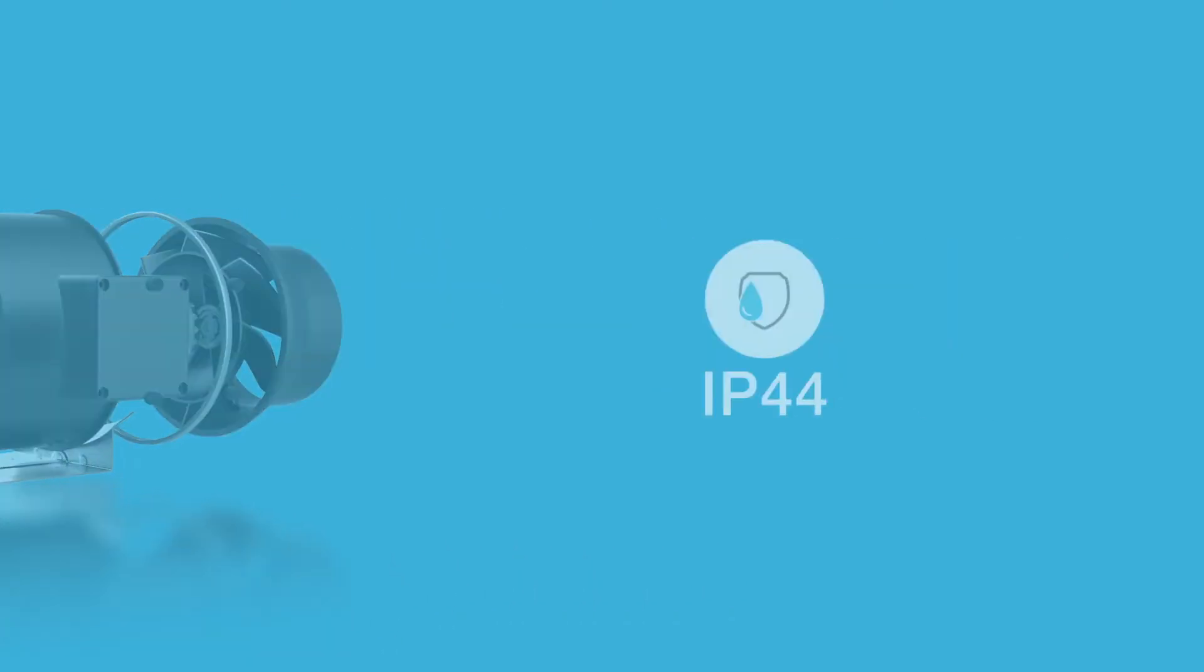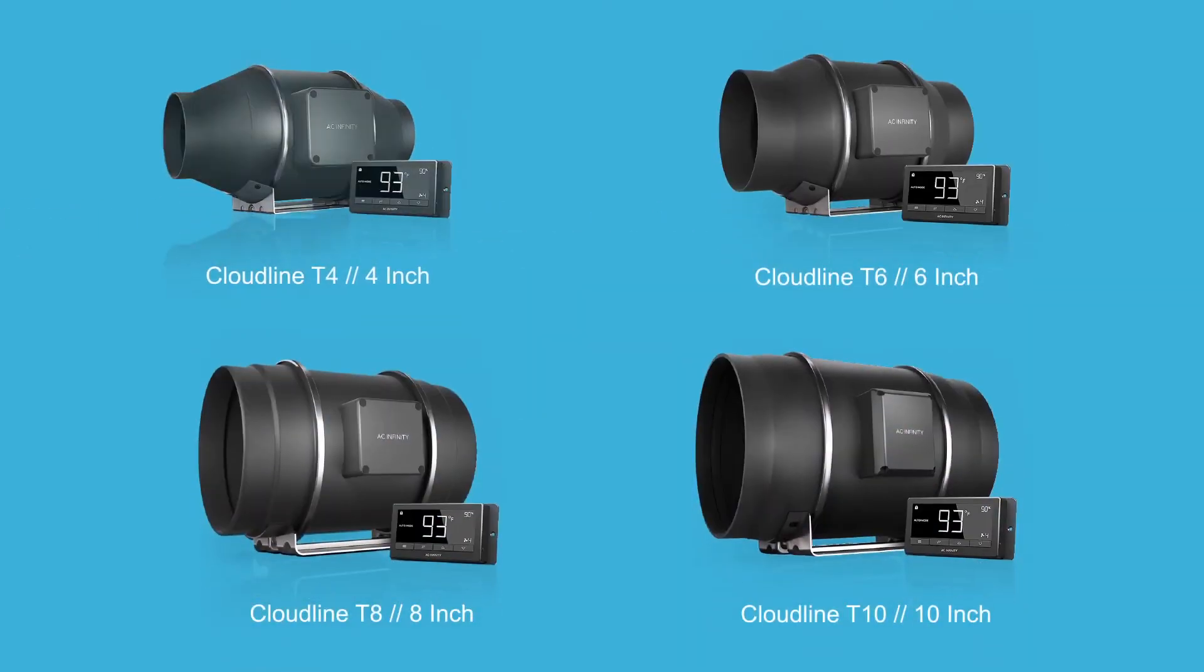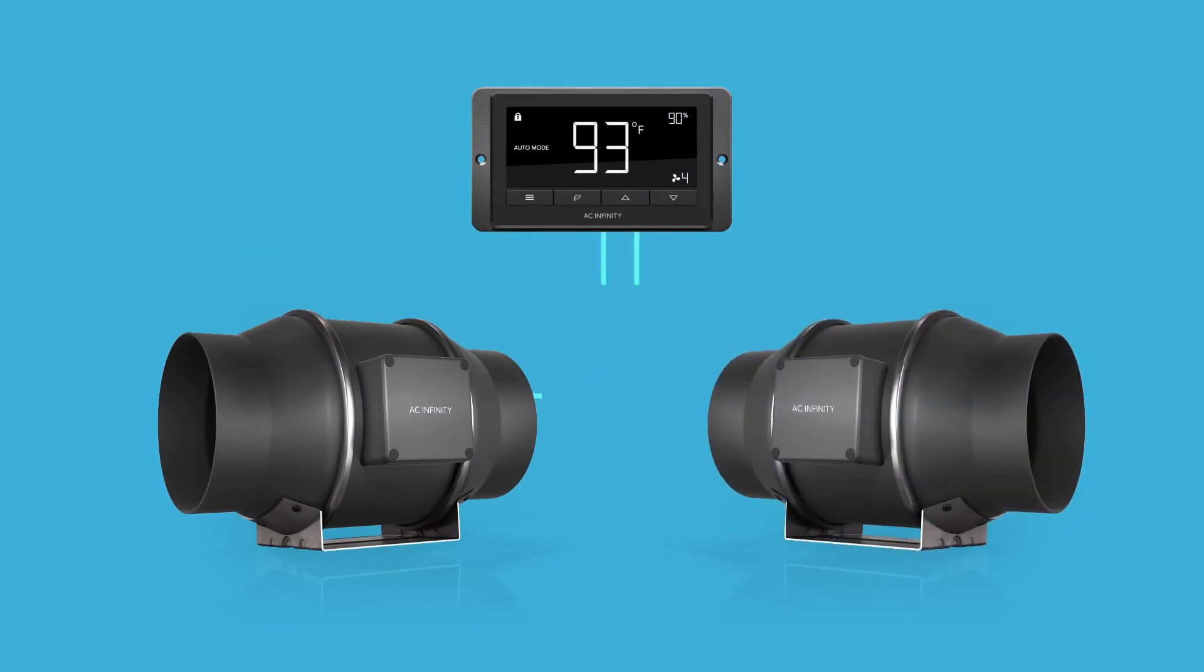The Cloudline Series is available in 4, 6, 8, and 10-inch models. The controller included with T-Series models can connect up to two duct fans to share the same programming.